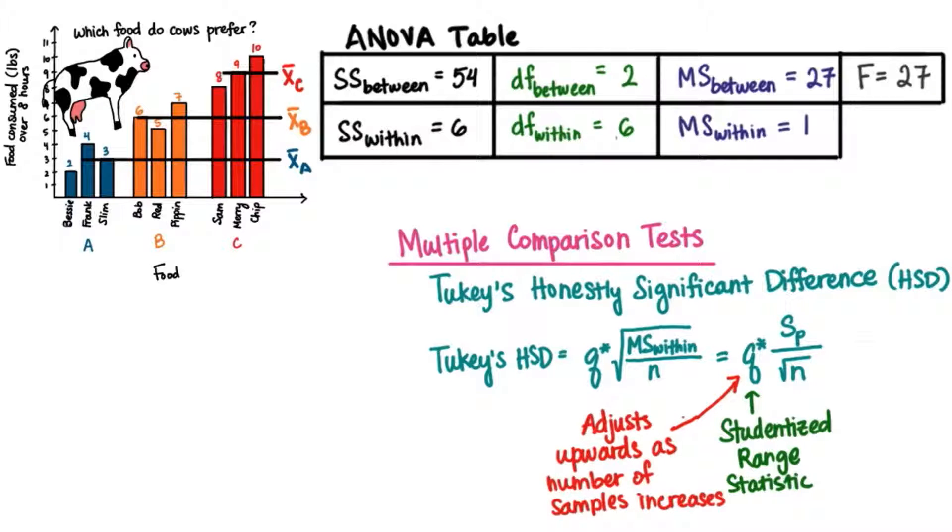Remember a type 1 error is when we reject the null hypothesis when it's actually true. Since Q increases when there are more groups that we're comparing, it makes it less likely to commit a type 1 error.